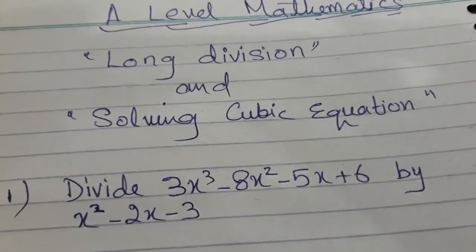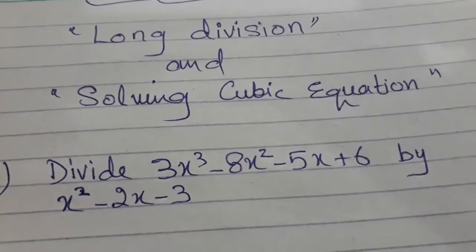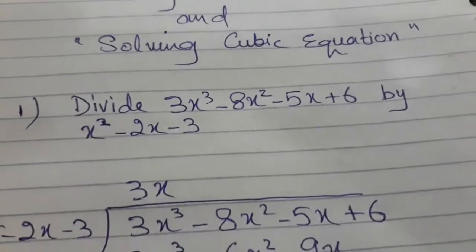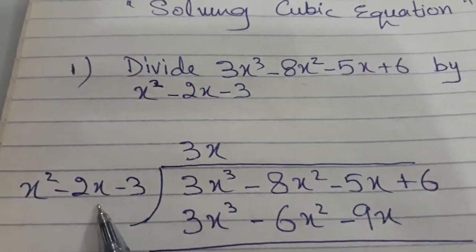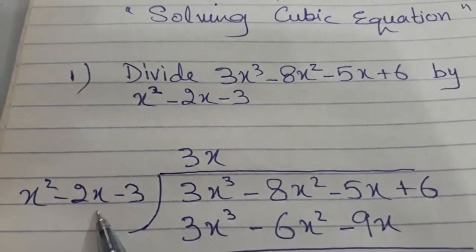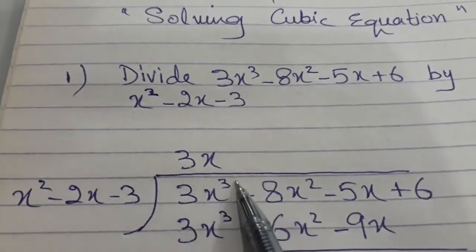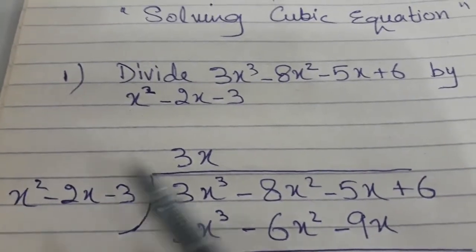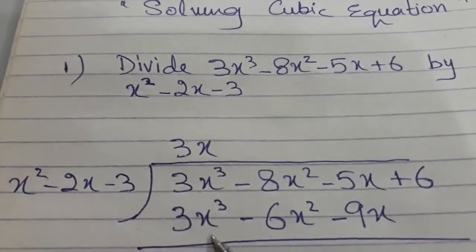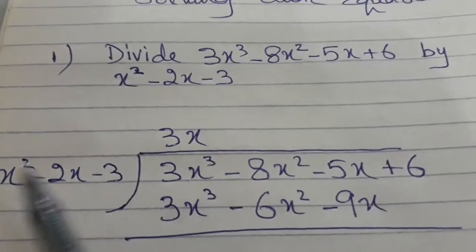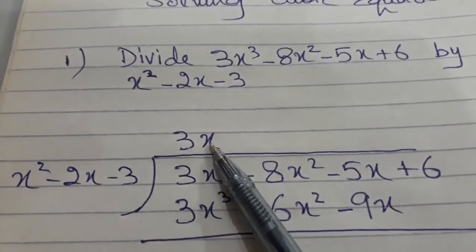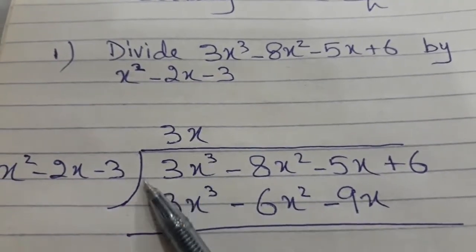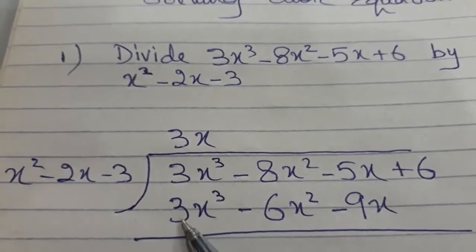Let's start with how to apply long division on a polynomial. Suppose this is a cubic equation which I want to divide by a quadratic equation. In long division, the divisor comes here — we know this from the number system. The technique is to try to cancel out the first term. So x squared multiplied by 3x will give you 3x cubed.